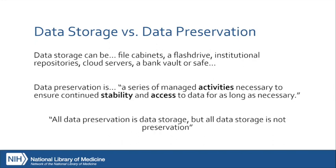Data preservation requires more than a place to store or deposit data. It consists of activities that go beyond data storage to protect the stability and accessibility of that data. Data preservation is what's essential for true data sharing. Examples of what's required for data to be preserved according to the NIH DMS policy include: data stored in a secure location, stored in multiple locations — if anyone's familiar with the rule of three or LOCKS, lots of copies keep stuff safe — and shared in open file formats that will have the greatest long-term use. All data preservation is data storage, but not all data storage is preservation.